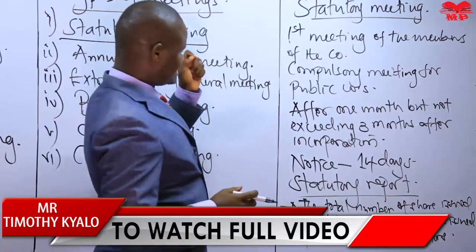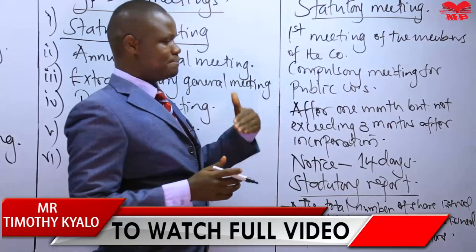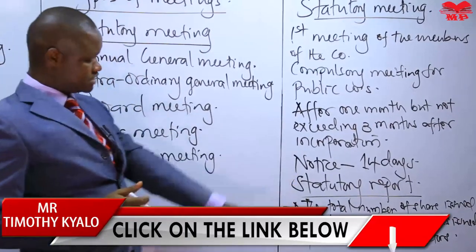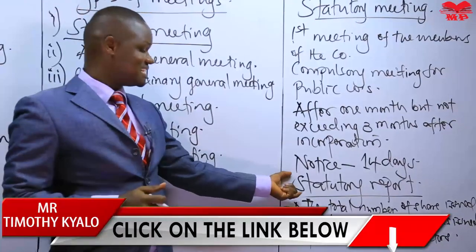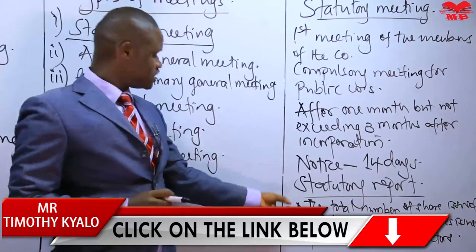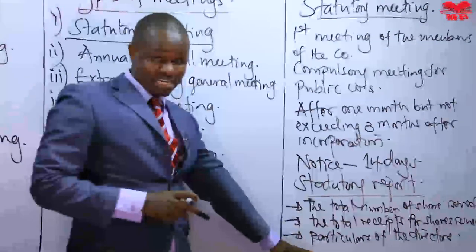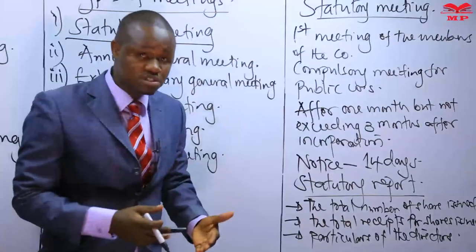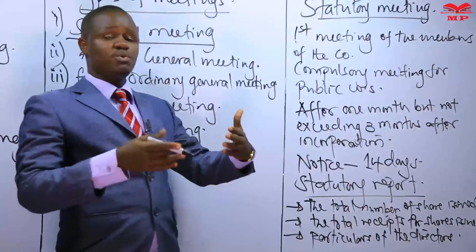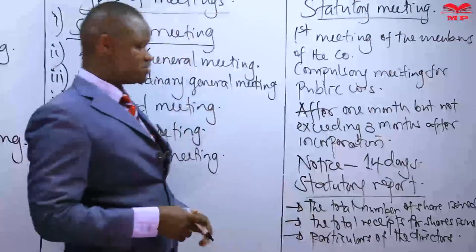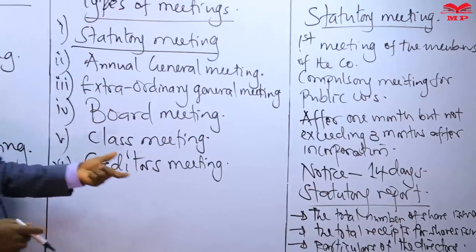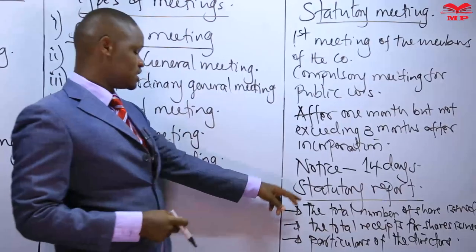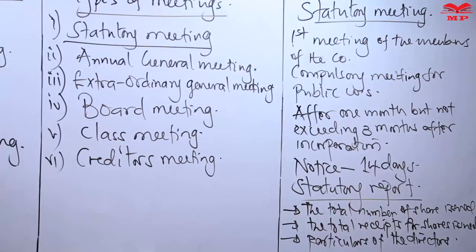Directors give a 14-day notice, and the agenda is to discuss the statutory report. In this report, there are details relating to the particulars of the directors, the total number of shares the company has issued, and the total receipts from those shares — making it possible to distinguish between fully paid and partly paid shares.